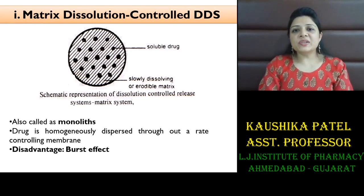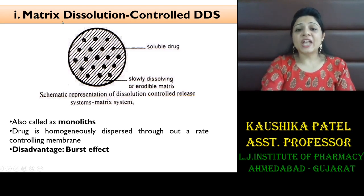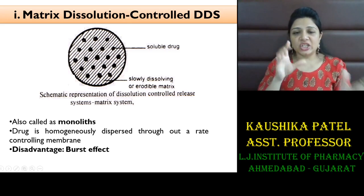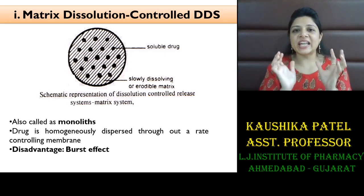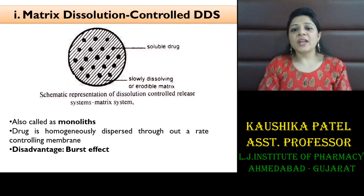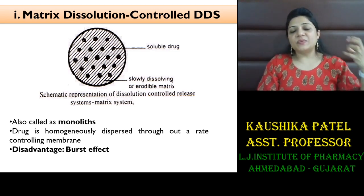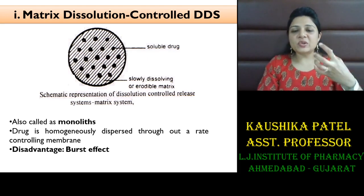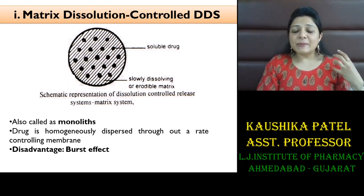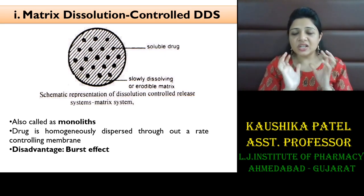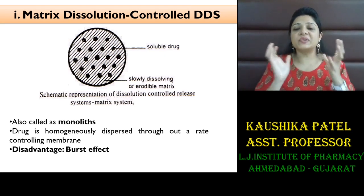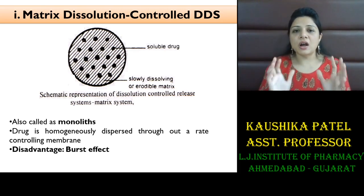When you are forming a matrix dissolution control system, also known as a monolithic system, you can see that there is a matrix — a grid of polymer — in which your drug will be entrapped or embedded. Through the dissolution of that polymer, the drug will be released gradually. The biggest disadvantage is that if the design is not successful, then burst release — the entire release of the drug — can occur.